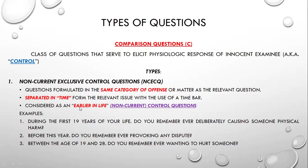The Non-Current Control Question (NCEQ) is considered earlier in life — these are from the examinee's past. Example: 'During the first 19 years of your life, do you remember ever deliberately causing someone physical harm?' These are the non-current control questions referring to earlier in life.